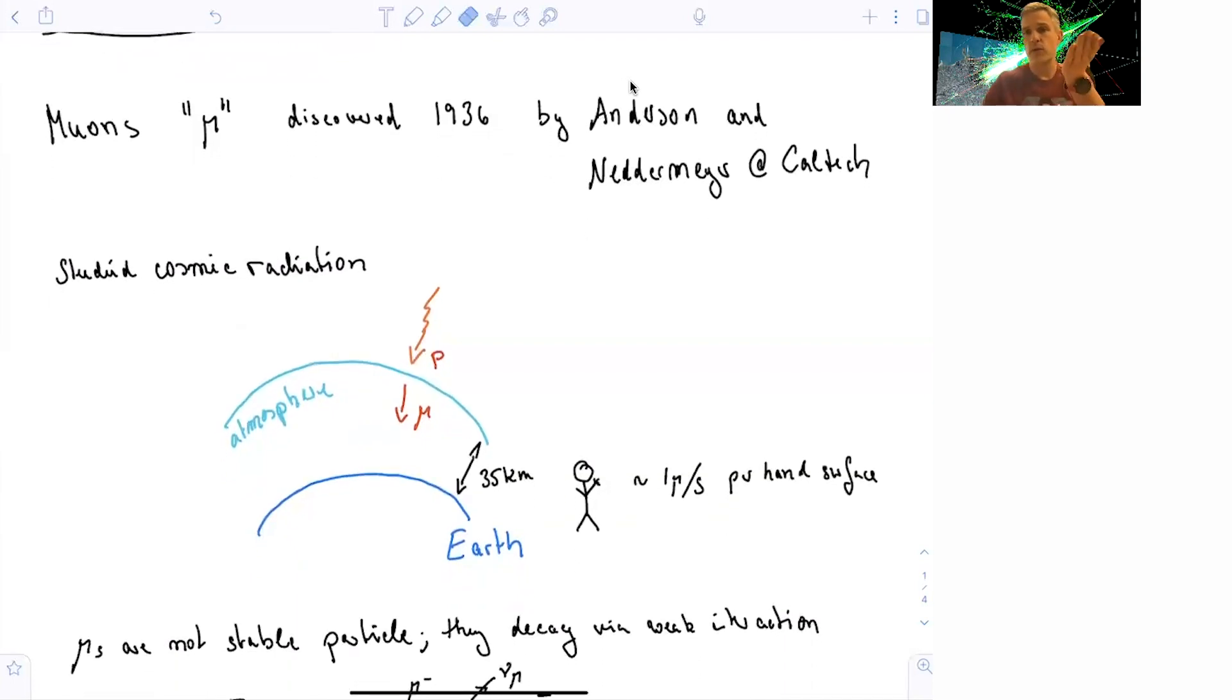On average, if you hold out your hand right now, about one muon travels through your hand every second. How is this possible?